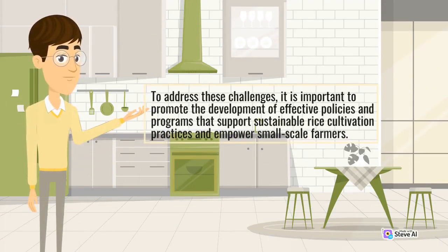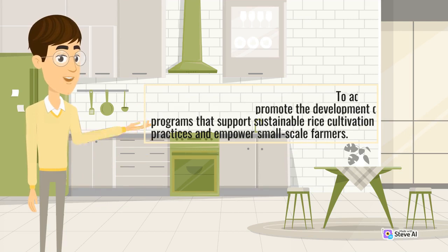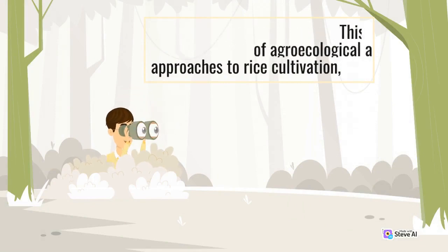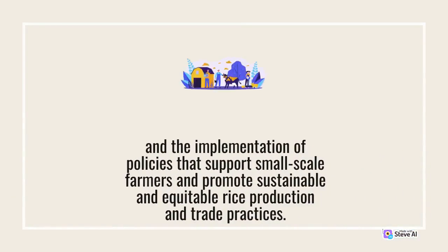To address these challenges, it is important to promote the development of effective policies and programs that support sustainable rice cultivation practices and empower small-scale farmers. This can include the development of agro-ecological and participatory approaches to rice cultivation, the provision of technical assistance and training to farmers, the establishment of certification programs that promote sustainable rice cultivation practices, and the implementation of policies that support small-scale farmers and promote sustainable and equitable rice production and trade practices.